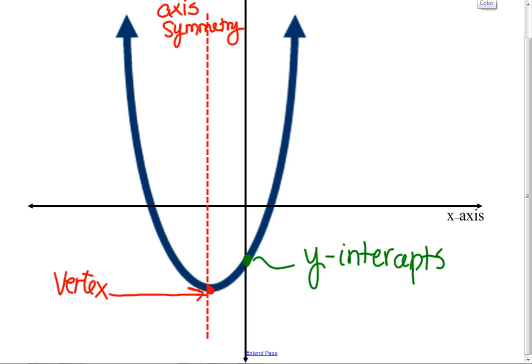The axis of symmetry would be if I wanted to fold this parabola in half, this side would line up with the other side. That's the axis of symmetry. These sides are equal. Vertex is the lowest point, or the maximum point. It depends on which way the parabola is.